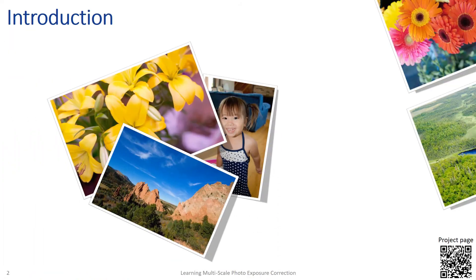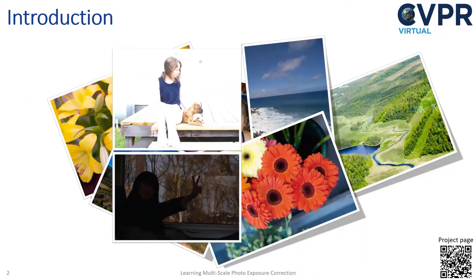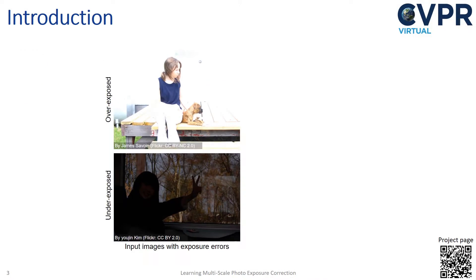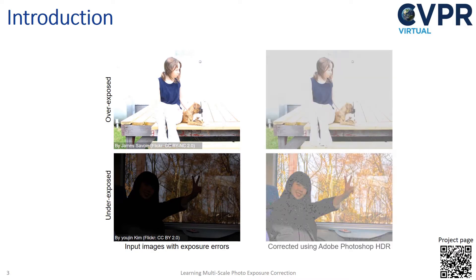We take many photos using smartphone and DSLR cameras. Some of our photos suffer from exposure errors. We can categorize these into overexposure and underexposure. Such images are challenging for photo editing software to correct.